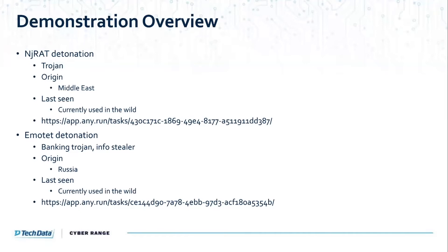First, what we'd like to do is show you what it would look like if an endpoint did not have Adaptive 360 on it, and then show you what it looks like with Adaptive 360. We're going to detonate two different variants of malware within a sandbox. The reason we do this is because the sandbox permits us to show a breakdown of the different executions over time.